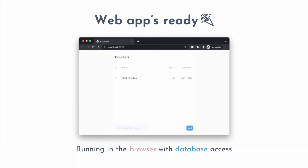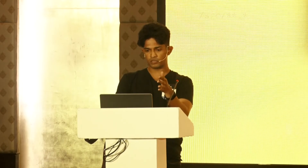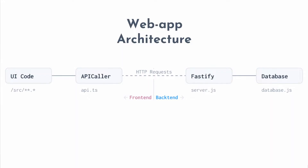So the web app architecture is pretty simple. You have your UI code, then you have an API caller — which is the DB variable. The API caller makes fetch requests to Fastify. Fastify gets stuff from the database class, which is running SQLite queries. And that's your web app.